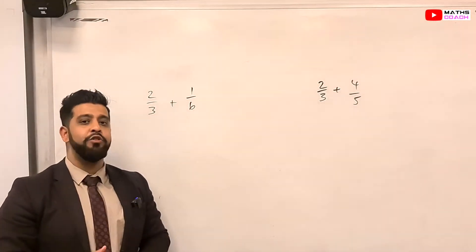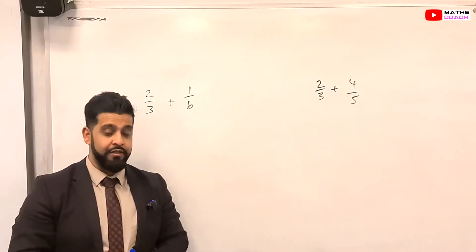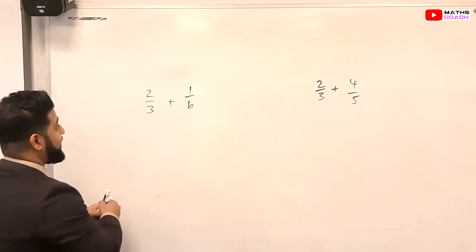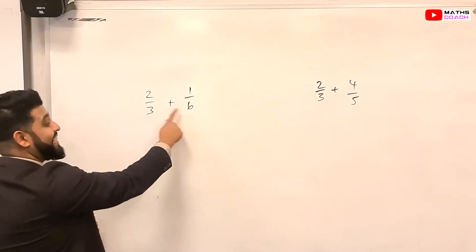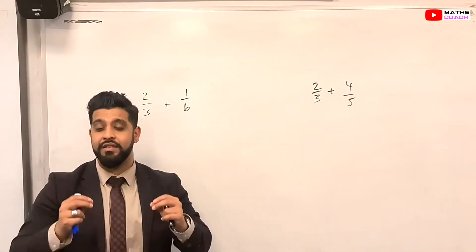Right, so the first thing that you need to be aware of is denominators and numerators. When you have two fractions and the denominators, which is the number here, is different, then you have got to make those denominators the same.